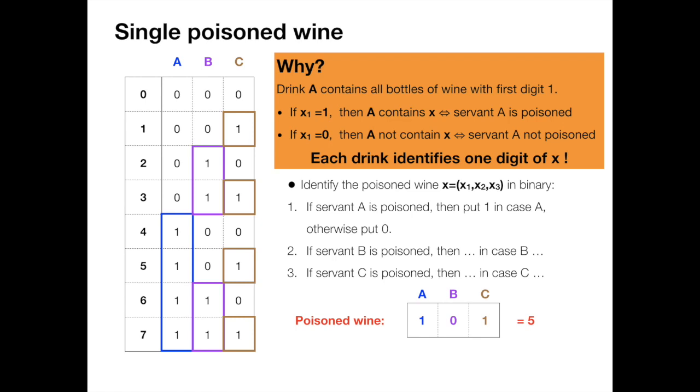This is great because this tells us we can recover x using log(n) drinks. In terms of information theory, I'm pretty sure this is the minimum number we can do.